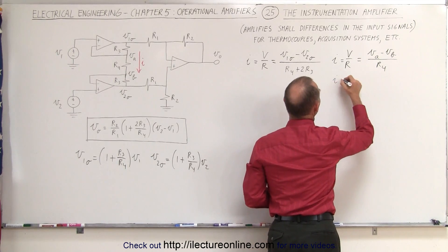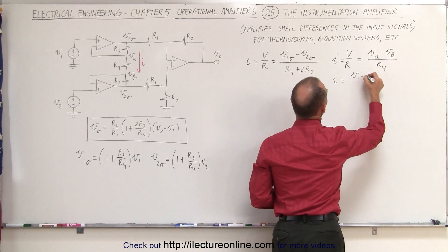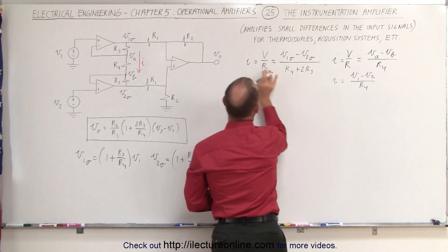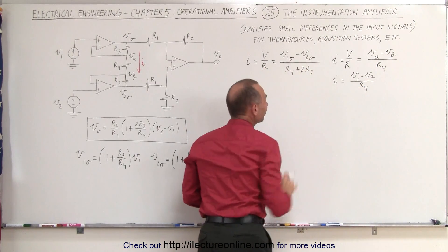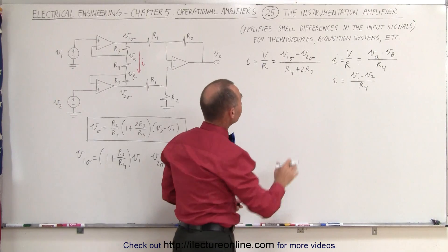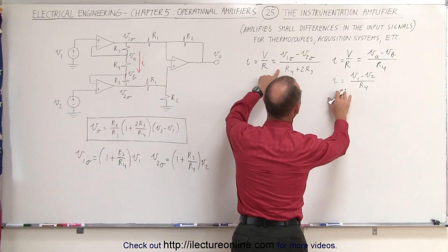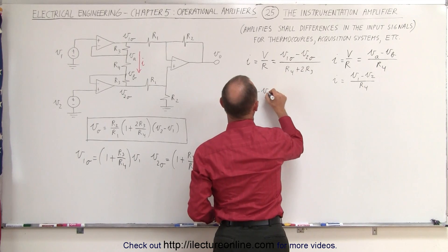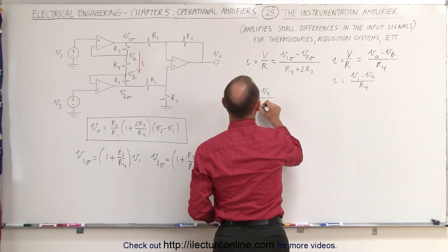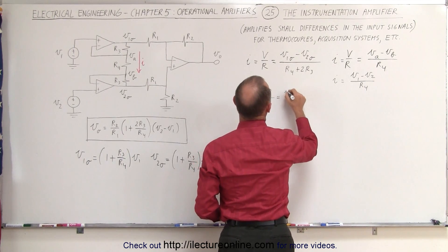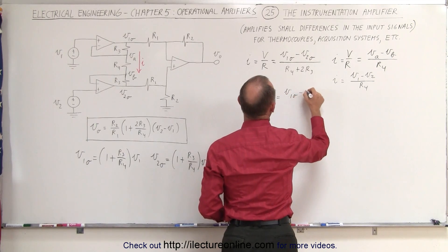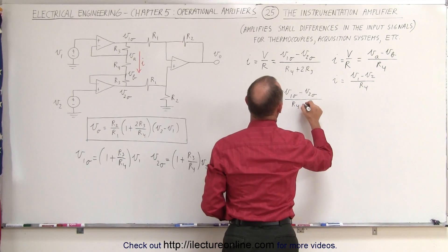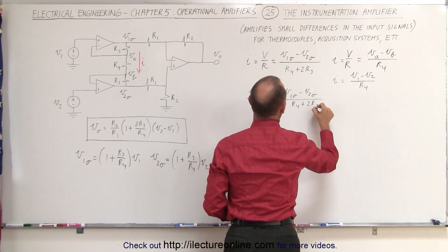So we can say that I is equal to V1 minus V2 divided by R4 and now we can set these two equations equal to each other. So we can write that V1 minus V2 divided by R4 is equal to V1 output minus V2 output divided by R4 plus 2R3.